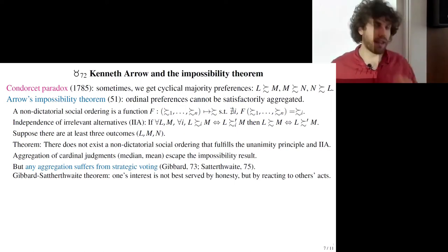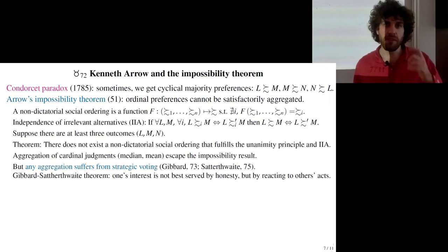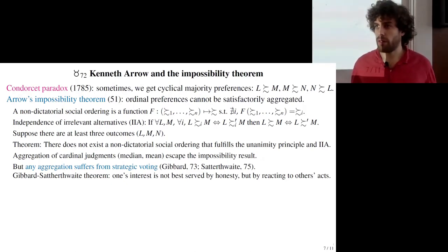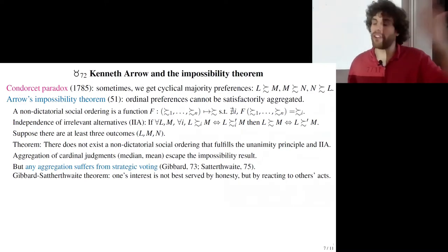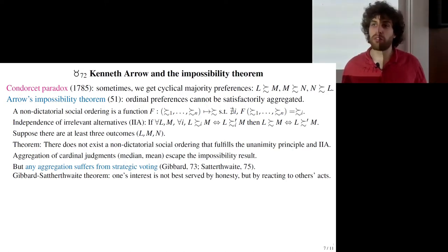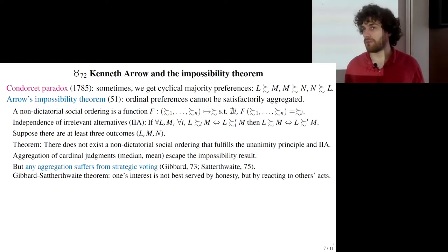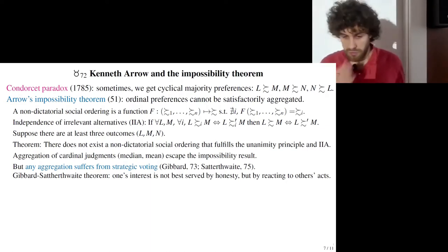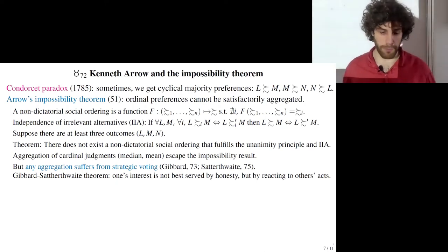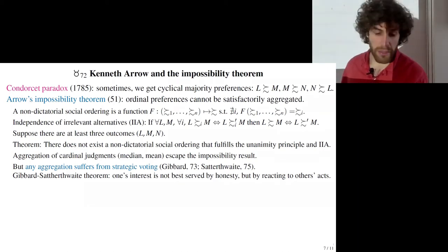The Gibbard-Satterthwaite theorem says that any aggregation method suffers from strategic voting: one's interest is not best served by honesty but by reacting to others' choices. For example, if you prefer Sanders but think Biden has more chances to win, and you prefer Biden over Trump, your interest is not to vote honestly for Sanders but to vote for Biden so he wins the Democratic primaries. Any voting method is subject to this problem.